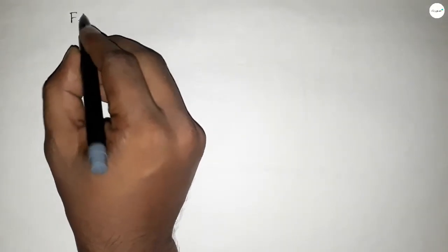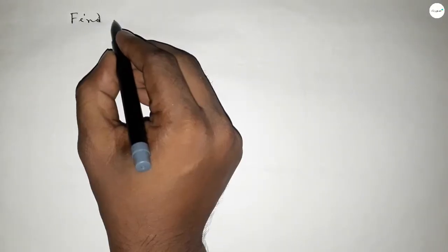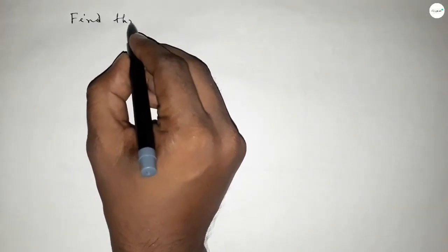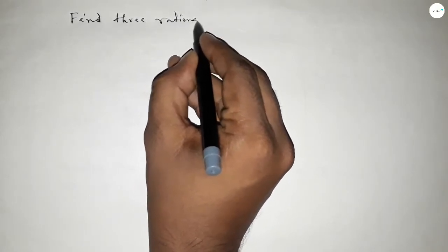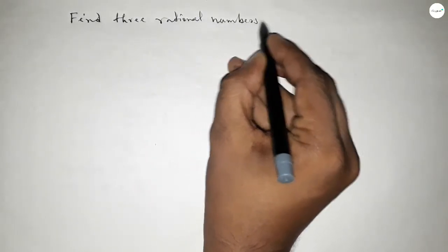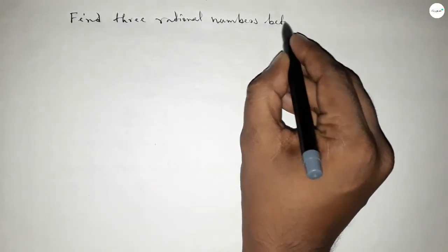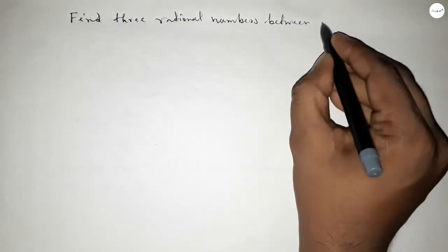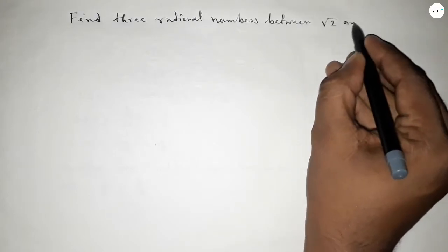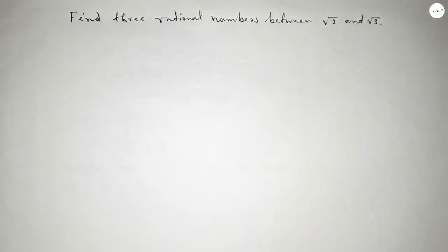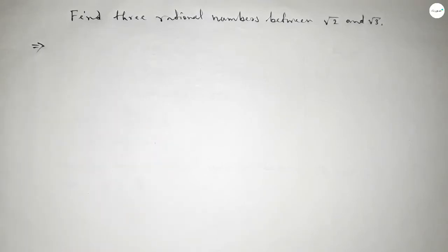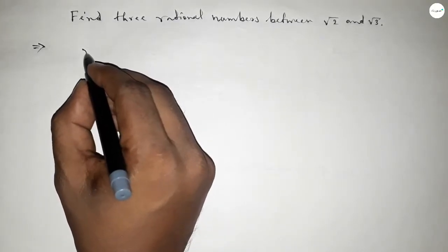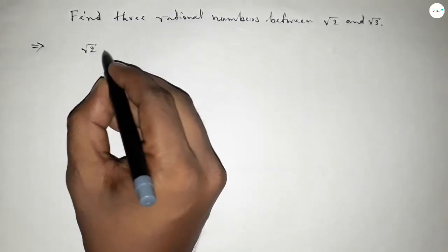Hi everyone, welcome to SSR Classes. Today in this video we have to find three rational numbers between root 2 and root 3. So let's start. First of all, write down the value of root 2 and root 3.